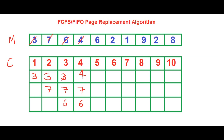The next element which wants to come in is 6, which is actually already present in the cache memory, so this is a page hit. Let me mark it here — this iteration is a page hit, and the cache state is 4, 7, and 6.